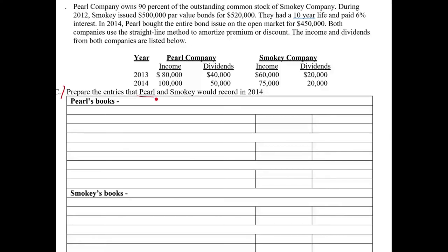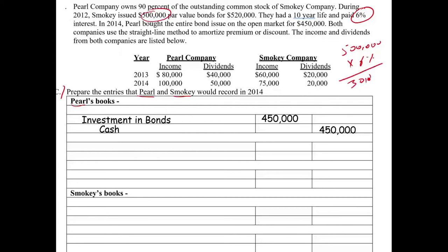Part C: prepare the journal entries for P Company (Perl) and S Company (Smokey) in 2014. P Company made an investment — debit investment in bonds $450,000, credit cash $450,000. The investment in bonds generates interest revenue: 6% of $500,000 is $30,000, so debit cash, credit interest revenue $30,000. Bear in mind, this interest revenue comes from S Company — it's intercompany revenue that we will eventually need to eliminate. Also, P Company bought the bond at a $50,000 discount, which will be amortized over the remaining eight-year life — $6,250 per year — debit investment in bonds, credit interest revenue $6,250.